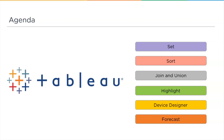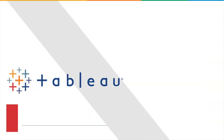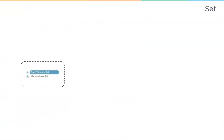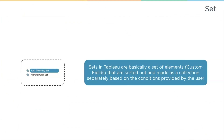Let's dive into the first one: the set. Sets in Tableau are basically a set of elements — if you have a variety of columns and rows, you can customize selected data. For example, if you have a car sales dataset with details like horsepower, price, and resale values, you can create a set of cars with the highest horsepower by adding conditions onto your data.